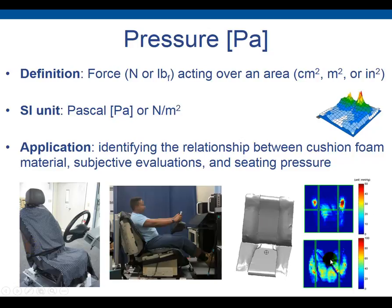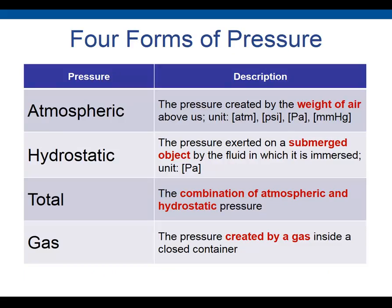These are two pressure mats manufactured by X Sensors, which is very expensive — about $10,000 US dollars per measurement tool. Here is the subjective seating pressure: this is the subject and this is the pressure when they sit on the driver seat. We have four different types of pressure: air pressure, hydrostatic pressure, total pressure, and gas pressure.